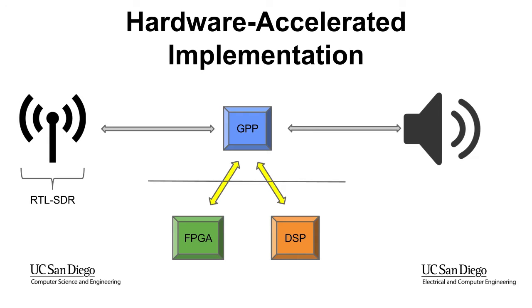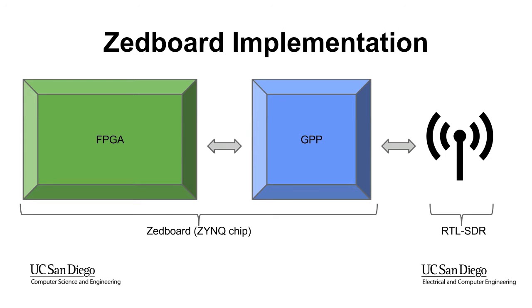This is a hardware-accelerated implementation, where the GPP offloads some of the tasking to the FPGA and the DSP. And this is how we are implementing it. We don't have a dedicated DSP chip in this design. The GPP is running a software radio platform, GNU Radio, which we are going to talk about later.